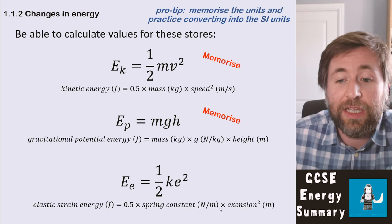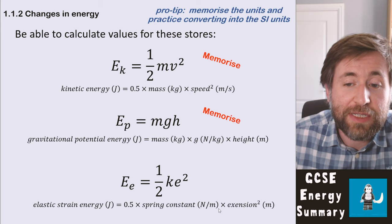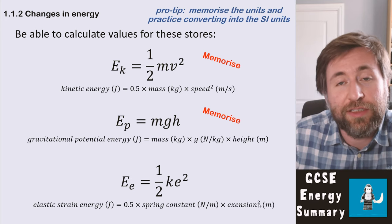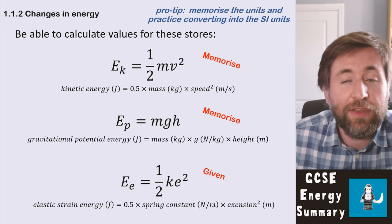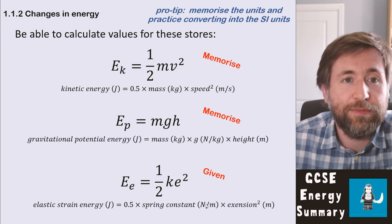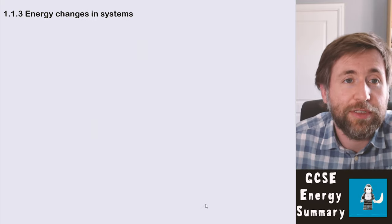The elastic strain energy is a half times the spring constant — which is how stiff the spring is, in newtons per meter — multiplied by the extension squared. That one is given to you on the formula sheet, so you don't need to memorize it.